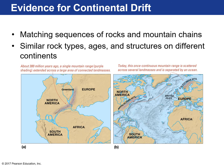The next line of evidence that Alfred Wegener used to support his continental drift hypothesis was matching sequences of rocks and mountain chains on different major landmasses and continents. He found similar rock types in eastern North America, Greenland, places in Europe, and also in North Africa. Their ages were very similar, and the structures of those rocks were very similar as well.